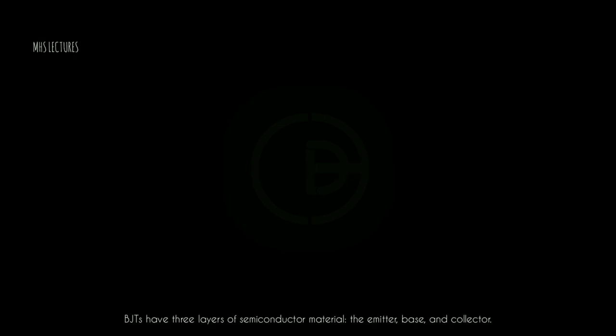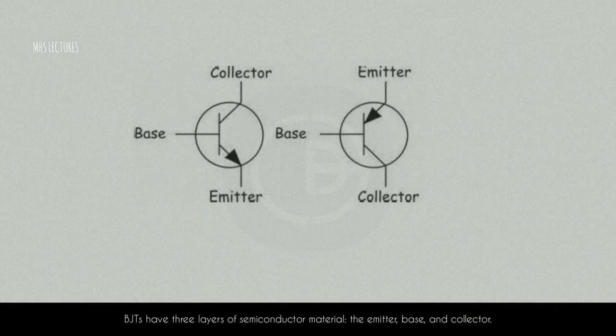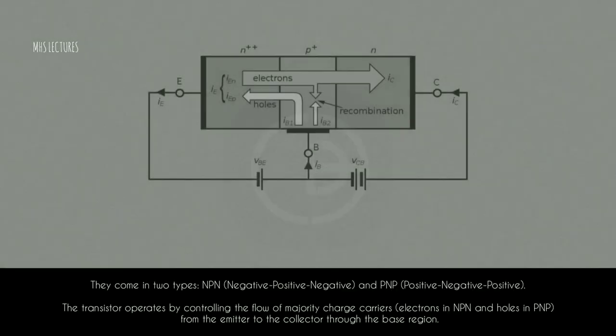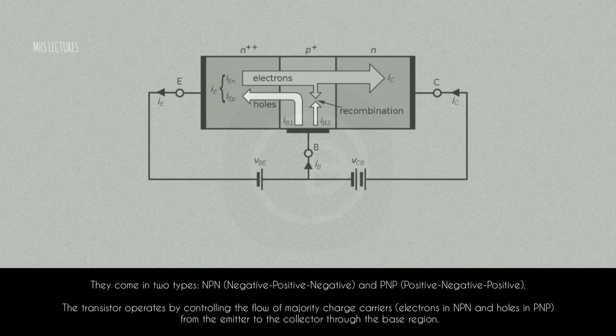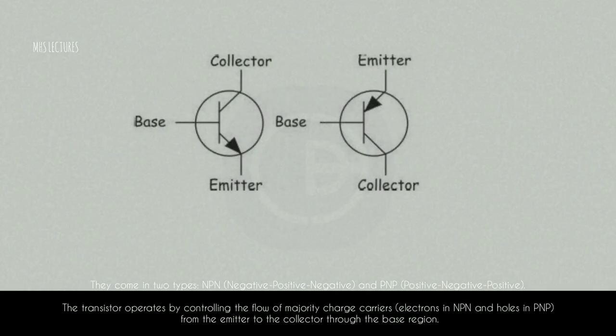There are two main types of transistors. 1. Bipolar junction transistors (BJTs) — BJTs have three layers of semiconductor material: the emitter, base, and collector. They come in two types, NPN (negative-positive-negative) and PNP (positive-negative-positive). The transistor operates by controlling the flow of majority charge carriers — electrons in NPN and holes in PNP — from the emitter to the collector through the base region.